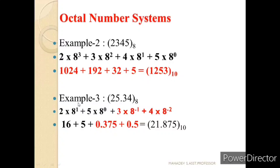Similarly, let us see an example with fractional octal numbers: 25.34 base 8. It is 5 × 8⁰, 2 × 8¹, 3 × 8⁻¹, and 4 × 8⁻². Converting: 16 + 5 + 0.375 + 0.0625, which gives us 21.875 in base 10. This is how octal numbers with fractional parts are represented.